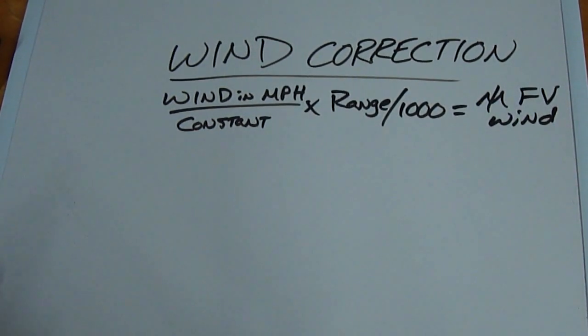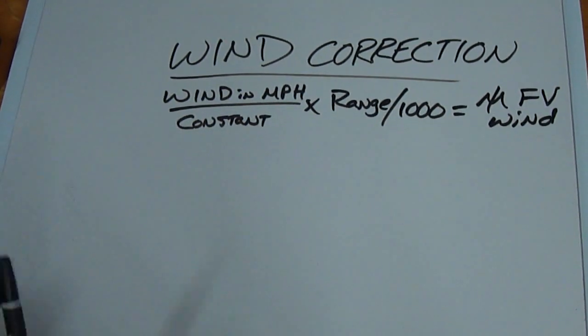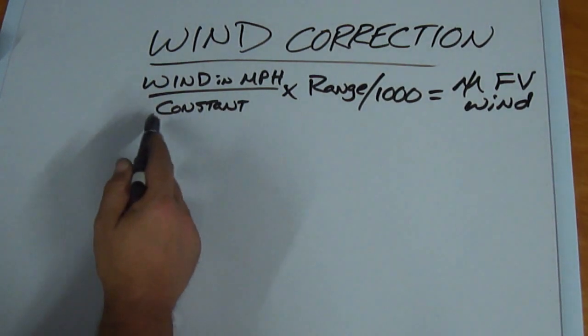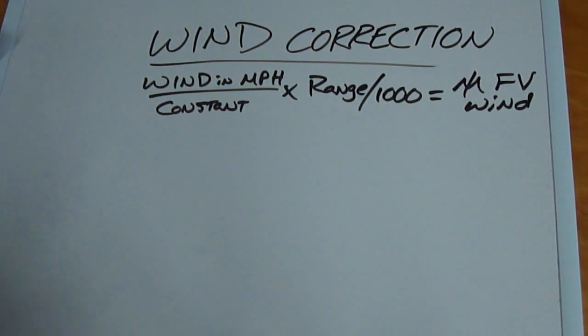This one's much simpler than it looks. Essentially what we're going to do is take our wind speed in miles per hour and divide it by the constant for our particular rifle.